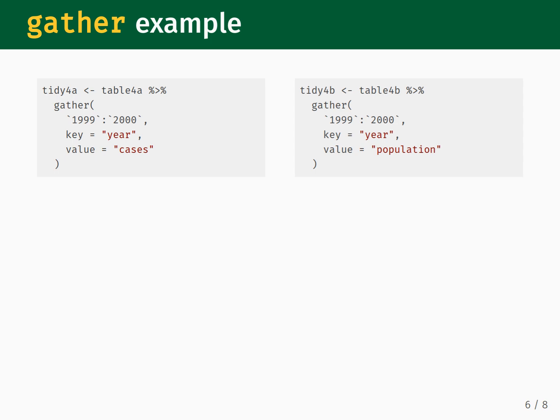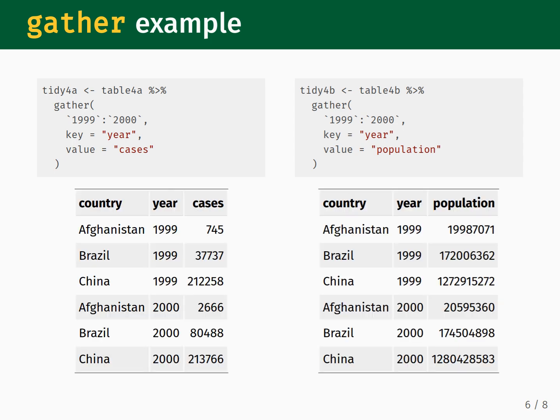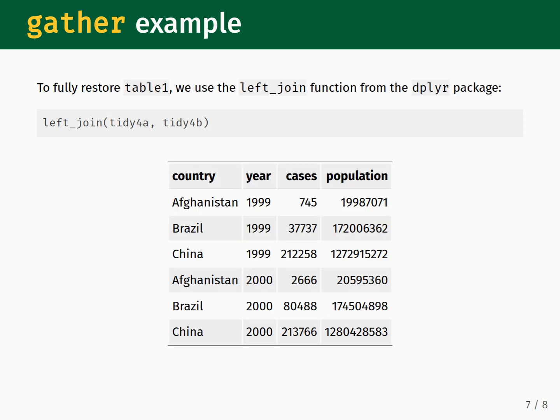The gather code needed to reshape Table 4B is very similar to Table 4A. The only difference is that we've changed the value input to be equal to population instead of cases. We execute the commands and end up with two reshaped tables. The reshaping worked as intended and we are close to getting the data back to tidy format. The last step is to merge the two tables together, which requires the use of a join. A join finds the common categories under the country and year columns and uses them to align the cases and population data in a single table without damaging relationships within the data.